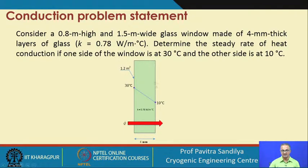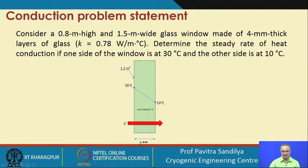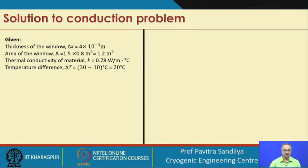As shown in the figure, this represents the glass window and the area through which heat transfer is occurring. On the left-hand side we have the high temperature of 30 degrees centigrade, on the right-hand side the surface is at 10 degrees centigrade. The thermal conductivity is 0.78 watt per meter per degree centigrade, the thickness of the glass window is 4 millimeters, and the temperature difference is 30 minus 10, which equals 20 degrees centigrade.